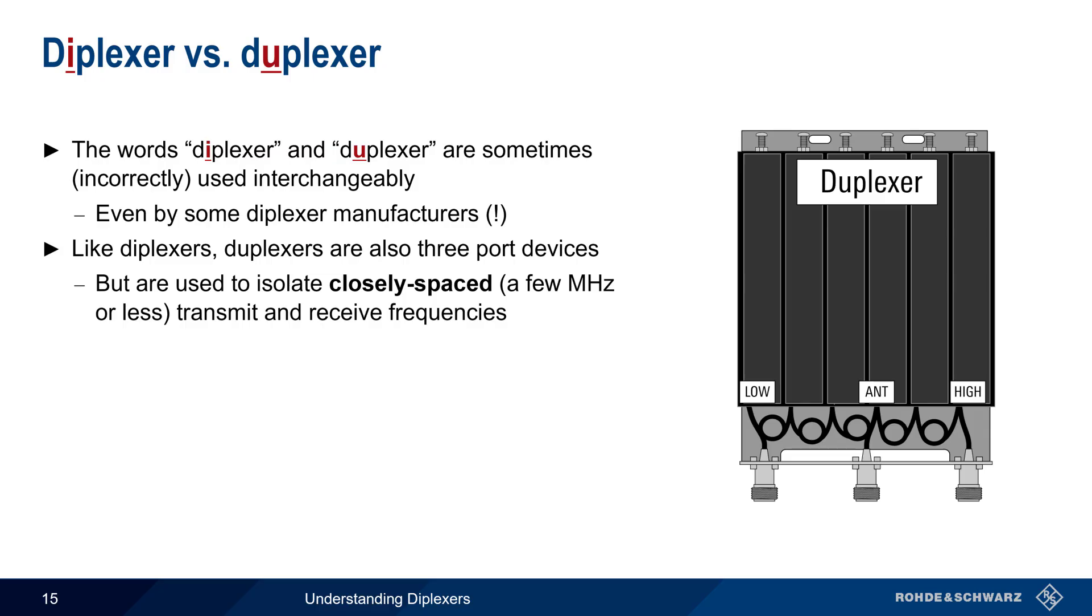Here, closely spaced usually means a few MHz or less. Duplexers enable simultaneous transmit and receive of closely spaced signals on a single antenna, without the risk of receiver damage or desense, and this is critical in radio repeater systems and similar applications.